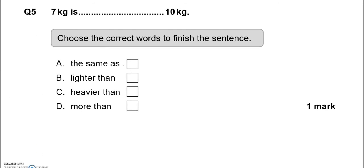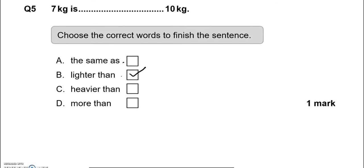Question 5. 7 kg is... Choose the correct words to finish the sentence. So 7 kg is the same as 10 kg which is not right. 7 kg is lighter than 10 kg and that is correct. And of course C and D are not correct.